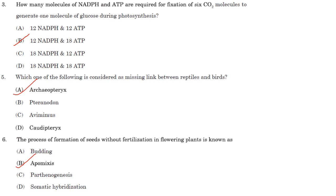The process of formation of seeds without fertilization in flowering plants is known as Apomixis. Parthenogenesis is a type of asexual reproduction involving development of female gametes without any fertilization. Somatic hybridization is the development of hybrid plants through the fusion of somatic protoplasts, which can be from different plant species or varieties.